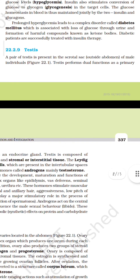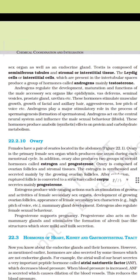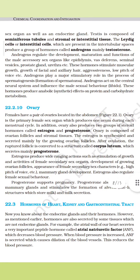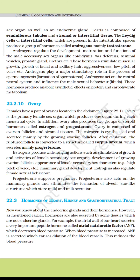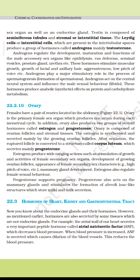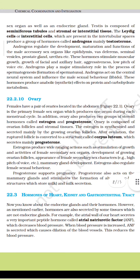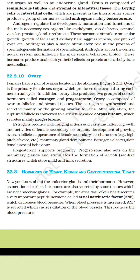Testis. A pair of testes is present in the scrotal sac outside the abdomen of male individuals. The testis performs a dual function as a primary sex organ as well as an endocrine gland. Testis is composed of seminiferous tubules and stromal or interstitial tissues. The Leydig cells (interstitial cells) present in the intertubular spaces produce a group of hormones called androgens, mainly testosterone. Androgens regulate the development, maturation and function of male accessory sex organs like epididymis, vas deferens, seminal vesicles, prostate gland and urethra. These hormones stimulate muscular growth, growth of facial and axillary hair, aggressiveness, and low pitch of voice. Androgens play a major stimulatory role in the process of spermatogenesis and also act on the central nervous system to influence male sexual behaviour.